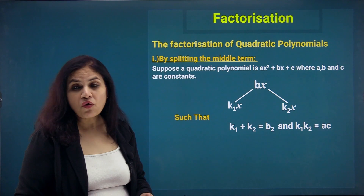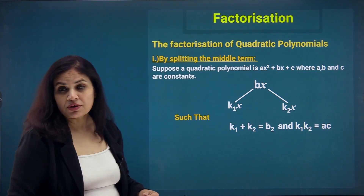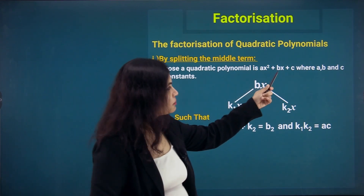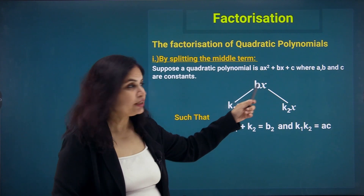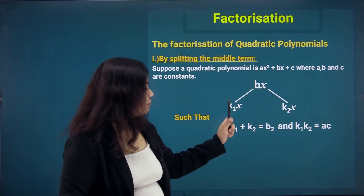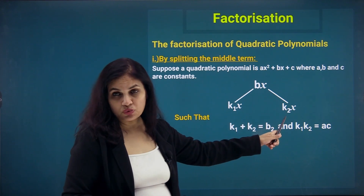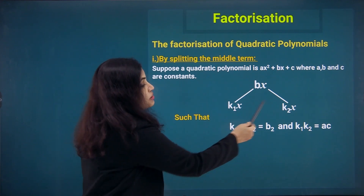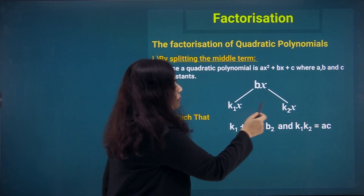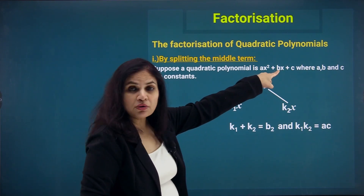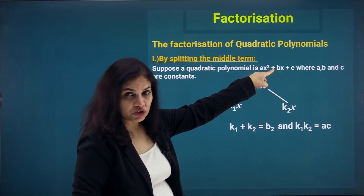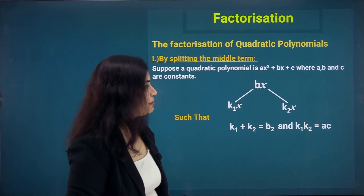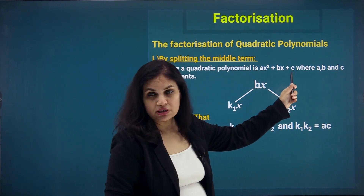We will be discussing four different cases depending on four different situations. In the middle term split, we split bx into two factors k1x and k2x, where k1 and k2 are integers carefully chosen so that k1 plus k2 equals the middle term coefficient b, and the product k1 times k2 equals the product of constants a times c.